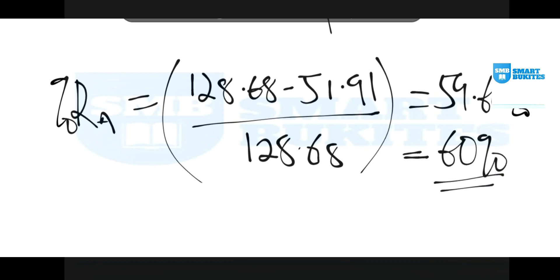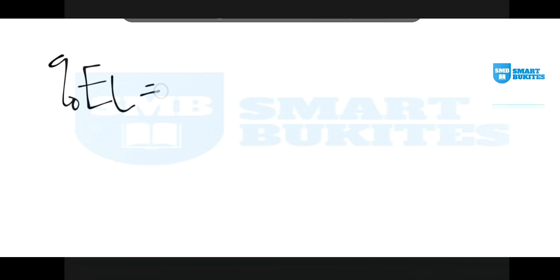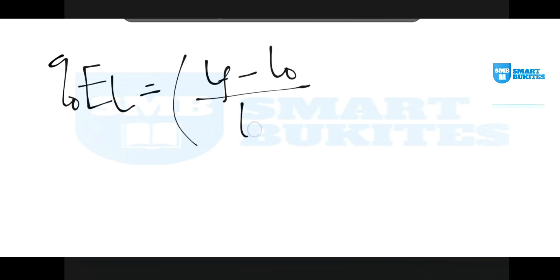The second measure is ductility in terms of percentage elongation. The formula is the final length at the point of fracture minus the original length, over the original length, times 100.